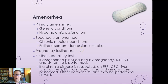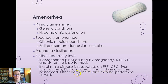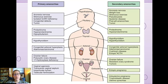After ruling out pregnancy, you can do thyroid hormone testing, FSH, and LH testing. If chronic disease is suspected, do a CED rate, CBC, liver function tests, BUN creatinine, urinalysis, and other hormone studies. You must investigate the cause of the amenorrhea. Primary amenorrhea can have genetic or hypothalamic failure causes. Secondary amenorrhea is usually due to conditions like anorexia nervosa, weight loss, strenuous exercise, or systemic diseases.